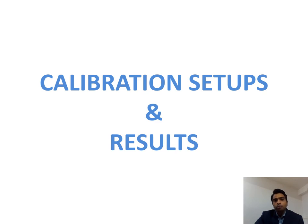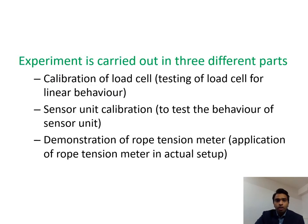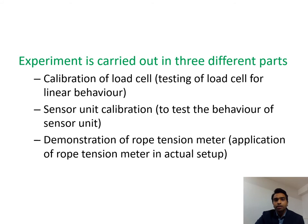To develop the final prototype, we carried out different testing and calibration processes and developed various calibration setups in our workshop. We have categorized the experiments into three parts: first, calibration of the load cell for testing linear behavior; second, sensor unit calibration to test the behavior of the sensor unit; and finally, a trial of the sensor unit on the actual setup. In the upcoming slides, I will explain each experimental setup and its results.